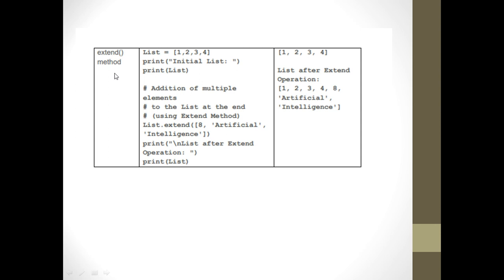Now using extend, I will add elements at the end of the list, and here I can add many elements at once. My initial list looks like one, two, three, four, and I say list.extend() with a list argument: [8, 'artificial', 'intelligence'] — which has three elements. Finally, if I print the list it will look like: one, two, three, four, eight, artificial, intelligence.